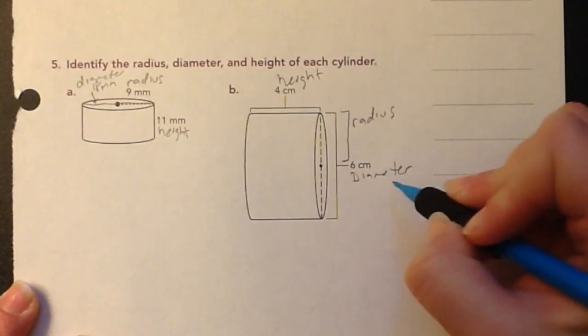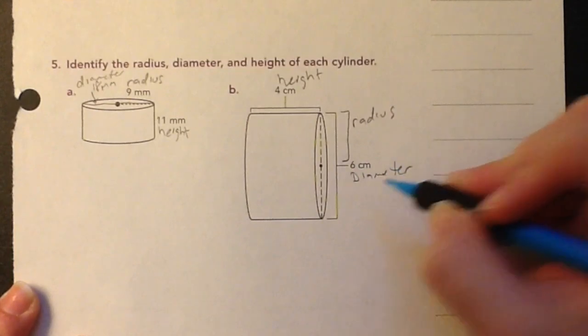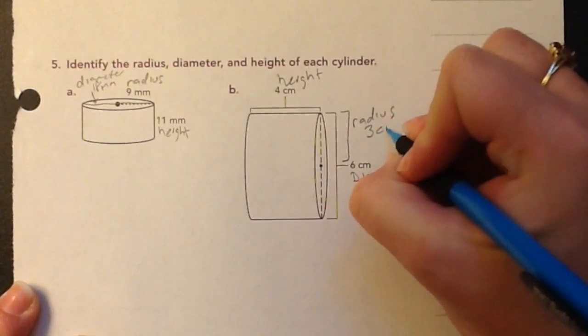So sometimes they'll give you the diameter instead and you have to figure out the radius. So it'll just be half. So in this case, it's three centimeters.